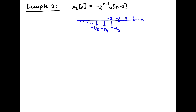Now we're going to consider our second example for the sequence x2(n). I've sketched it here. The u(-n-2) means the sequence goes to 0 after n equal minus 1 and is non-zero before n equal minus 1. The negative sign guarantees it's purely negative and decreasing — at n = -2 we get minus 2^(-1) which is minus a half, and at n = -3 it's minus 2^(-2) which is minus a quarter, and so on.